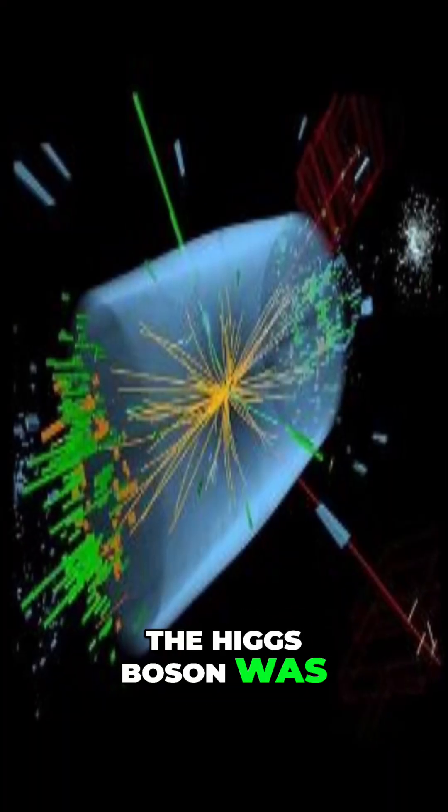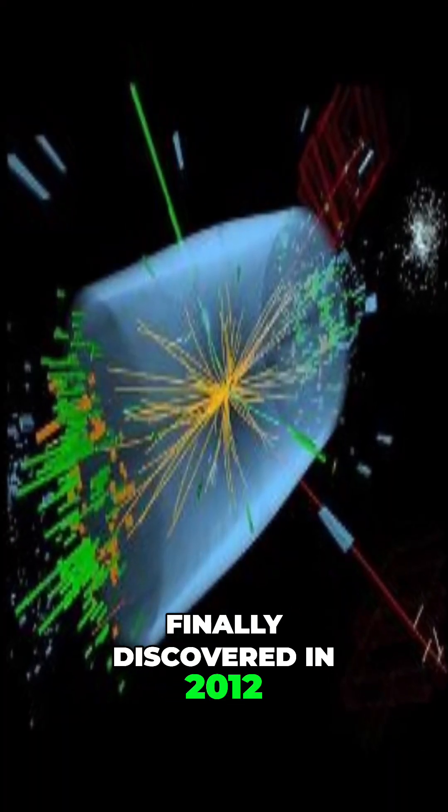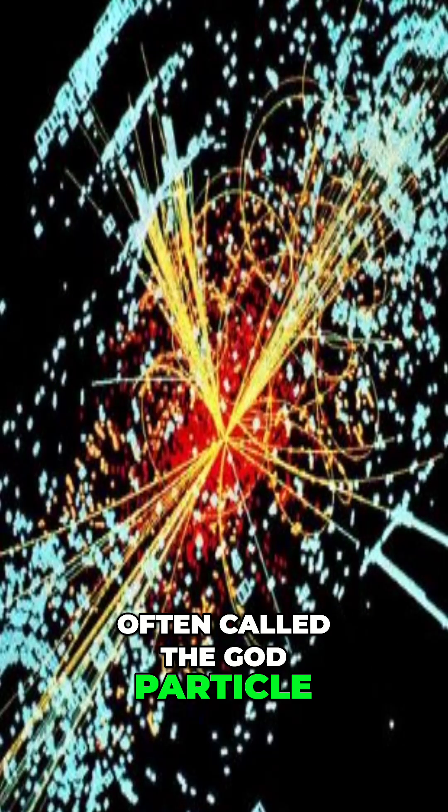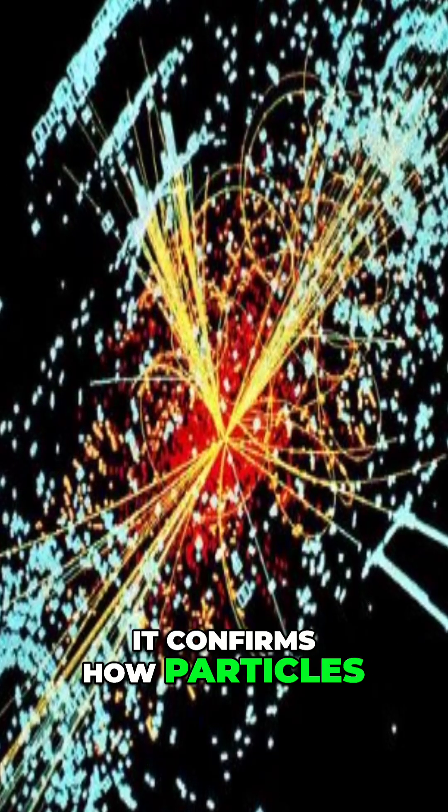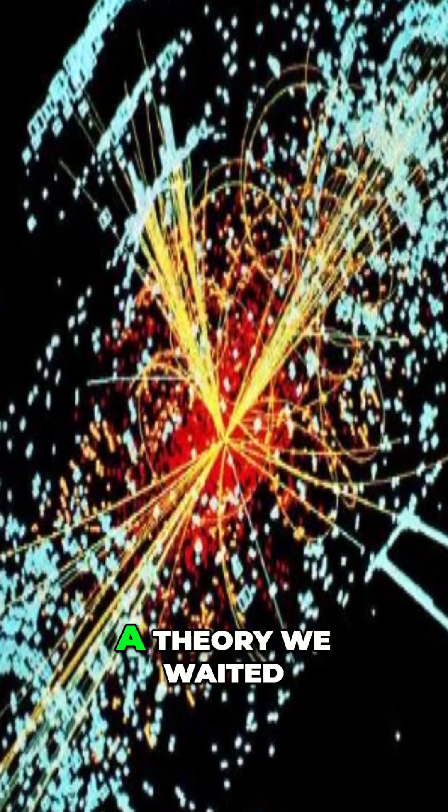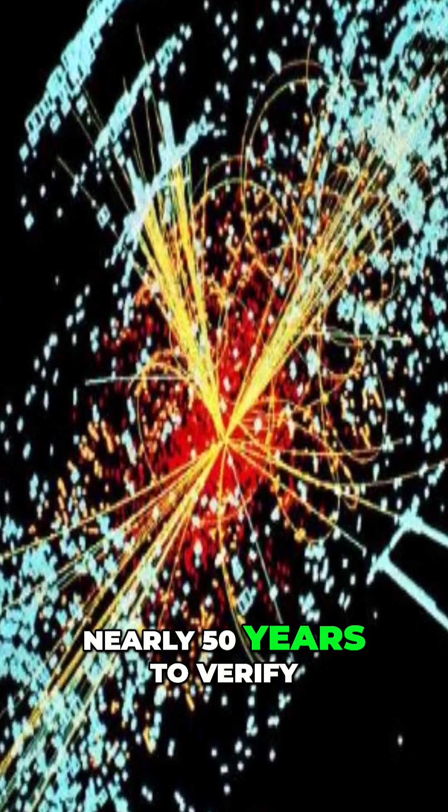2. The Higgs boson was finally discovered in 2012, often called the God particle. It confirms how particles get mass, and proved a theory we waited nearly 50 years to verify.